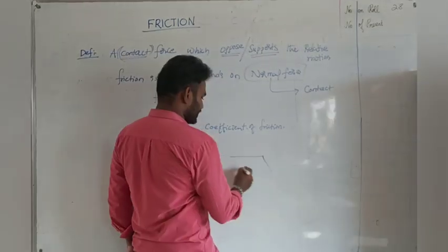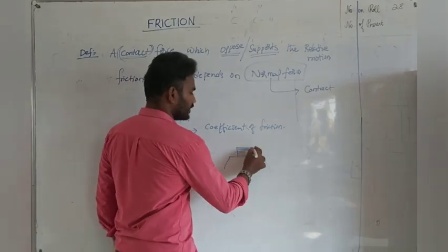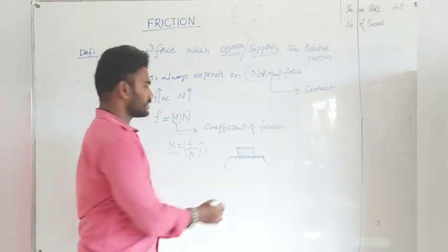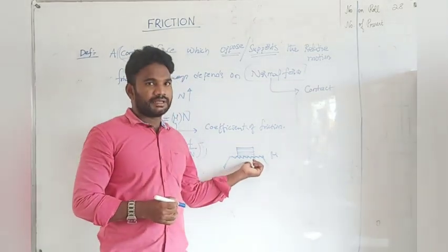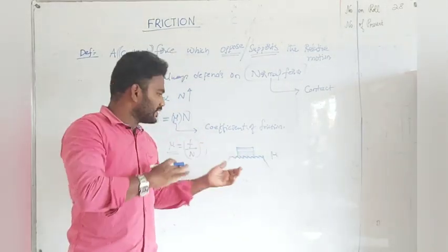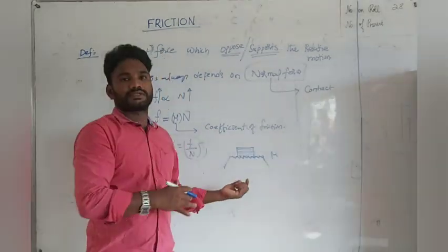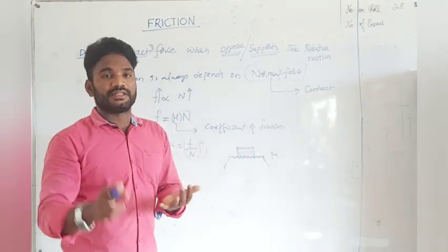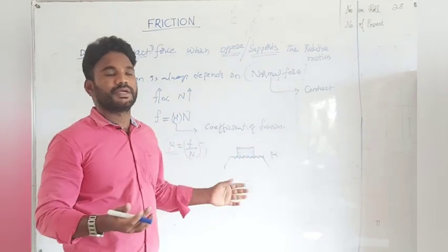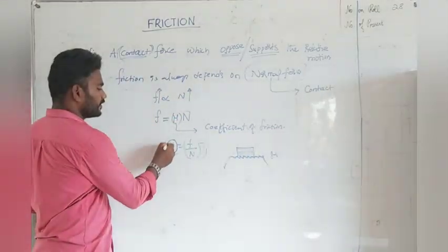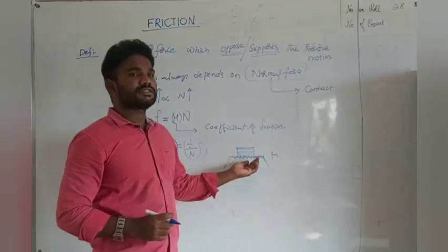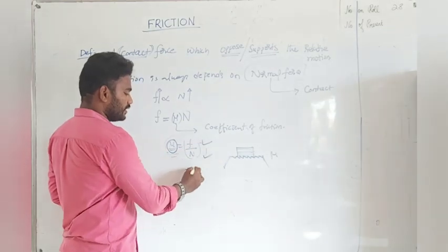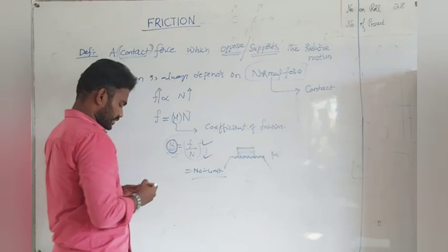The coefficient of friction depends upon the nature of the surface. For example, consider a book placed on a table — every table surface has some μ value based on the nature of the surfaces in contact. The surface may be rough, smooth, or hard — the value of μ is based on that. Importantly, μ is independent of any other physical quantity. Since it is a ratio of one force to another force, there are no units or dimensions for μ.